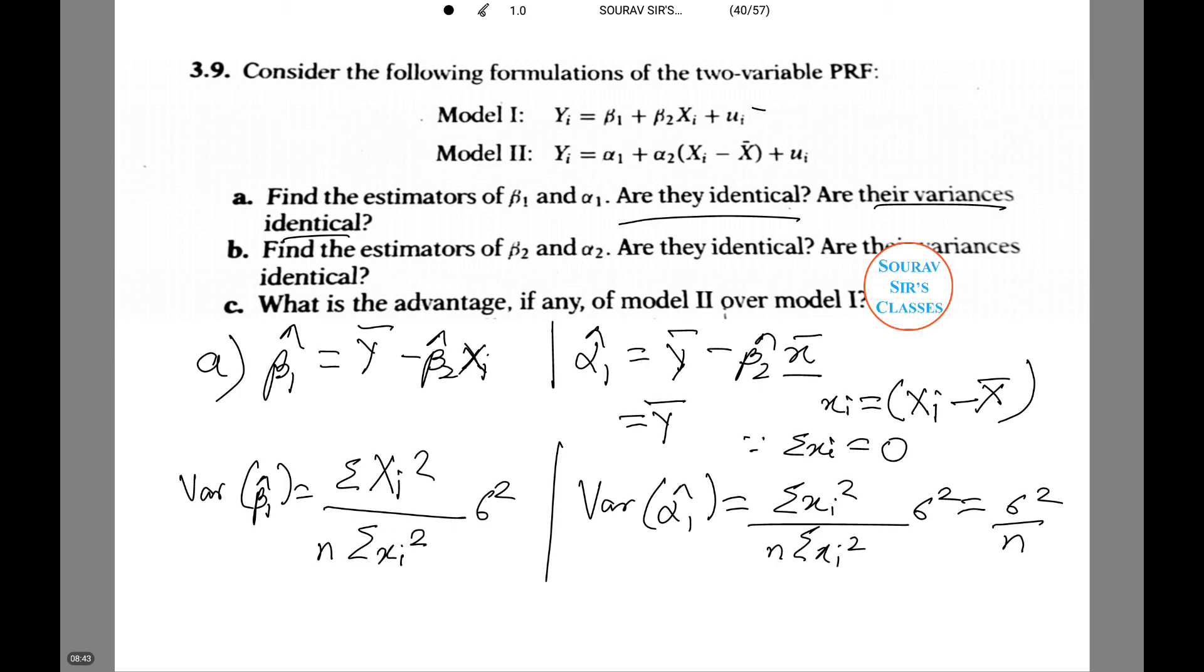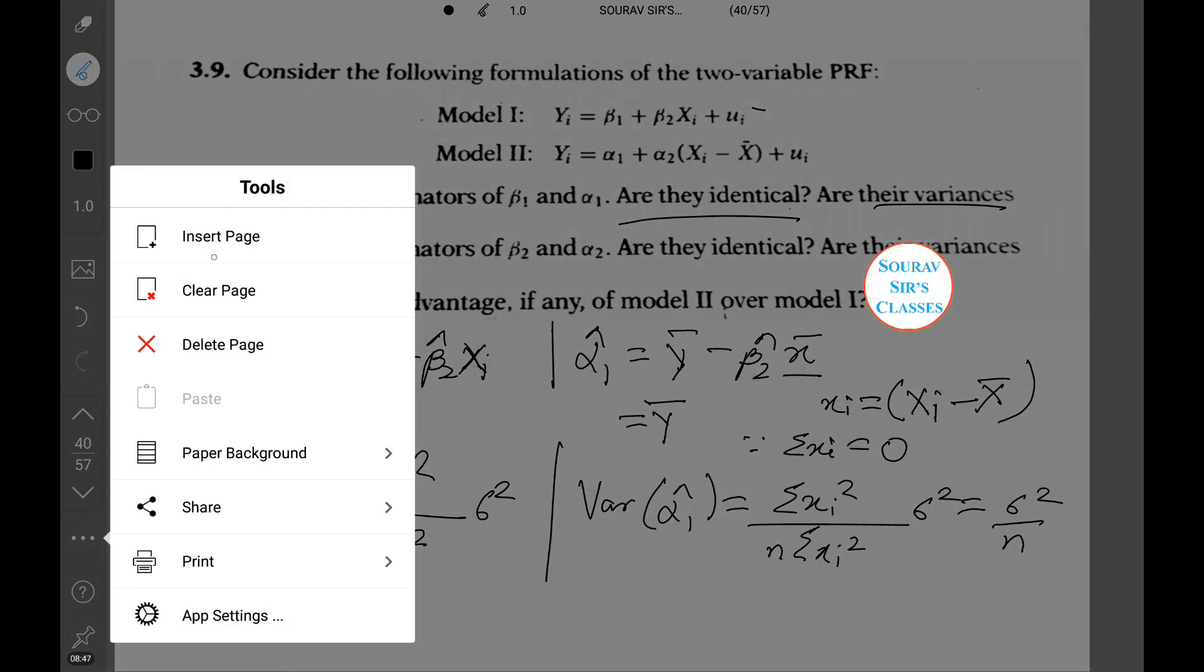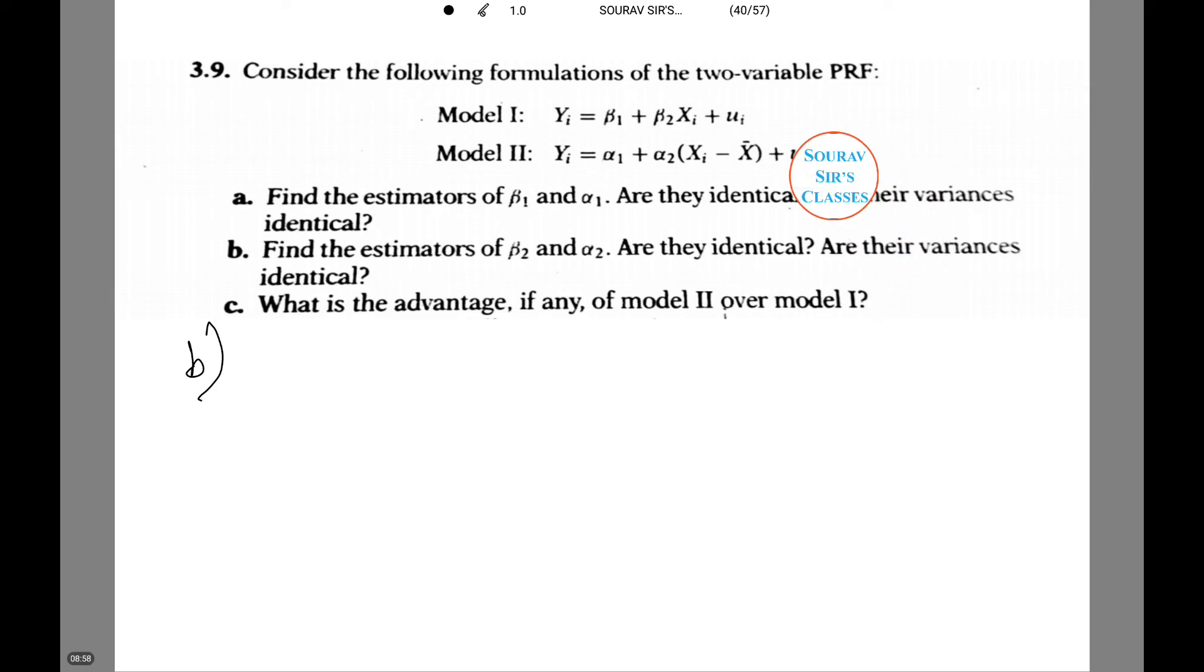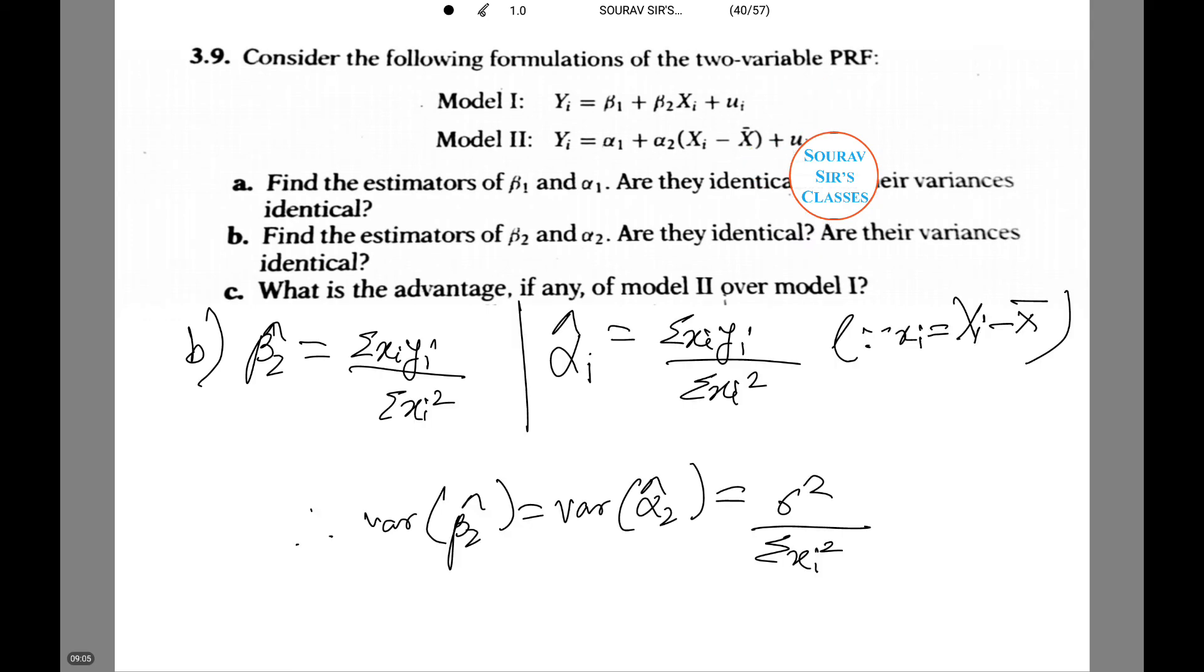I'll clear the screen so that we can do number b. We need to find the estimators of beta 2 and alpha 2 and find again whether they are identical and their variances are identical or not. Similarly we proceed and I have done the sum so that it becomes easier for you. In this case however the estimates and the variance of the two slope estimators are the same.